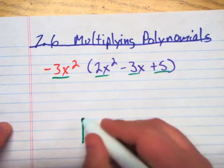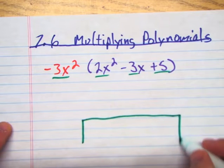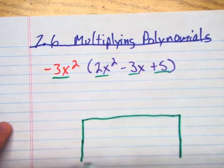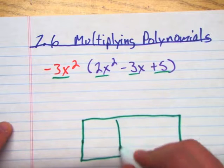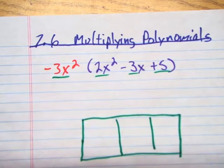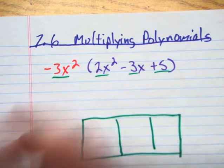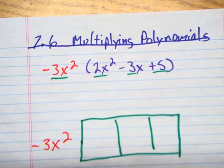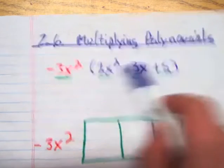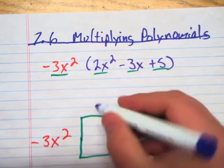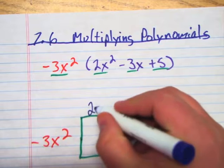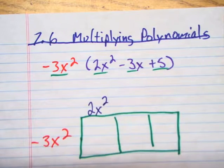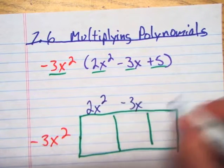I'm going to draw mine a little big. You don't have to be this big, but I want everybody to see how we do it. I'm going to put my negative 3x squared here, and then each of these terms I'm going to write above here. So this will be a positive 2x squared, negative 3x, and then a positive 5.